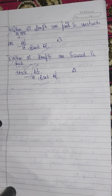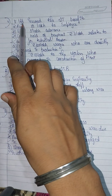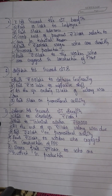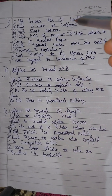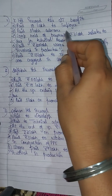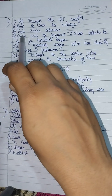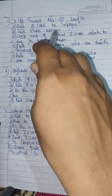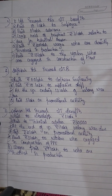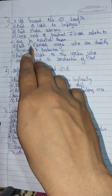Now let's look at the numerical problem. The first one: paid 10 lakhs to employees — so you pay 10 lakhs to employees. Second, paid 7 lakhs to employees. Third, paid 5 lakhs in advance. And the company held a payment of 3 lakhs due to technical reasons.